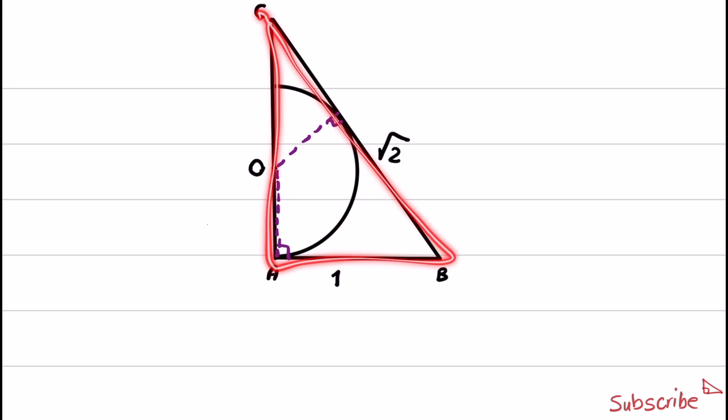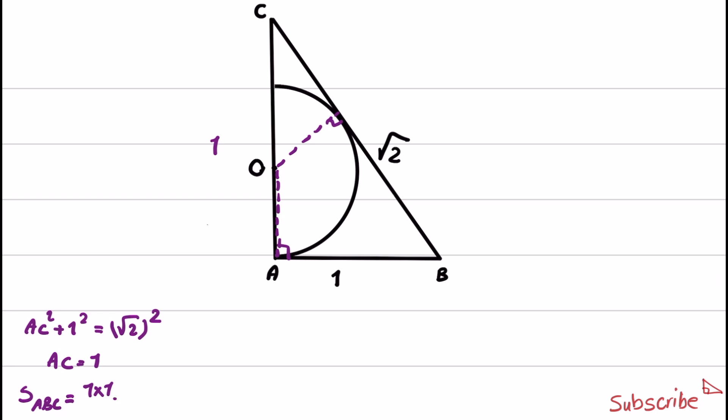Now, ABC becomes a right triangle, and we can use Pythagorean theorem to obtain the length of AC. So AC squared plus 1 squared is equal to square root of 2 squared. And from this, AC is equal to 1. And we can also obtain the area of triangle ABC as 1 times 1 divided by 2, which becomes 1 over 2.